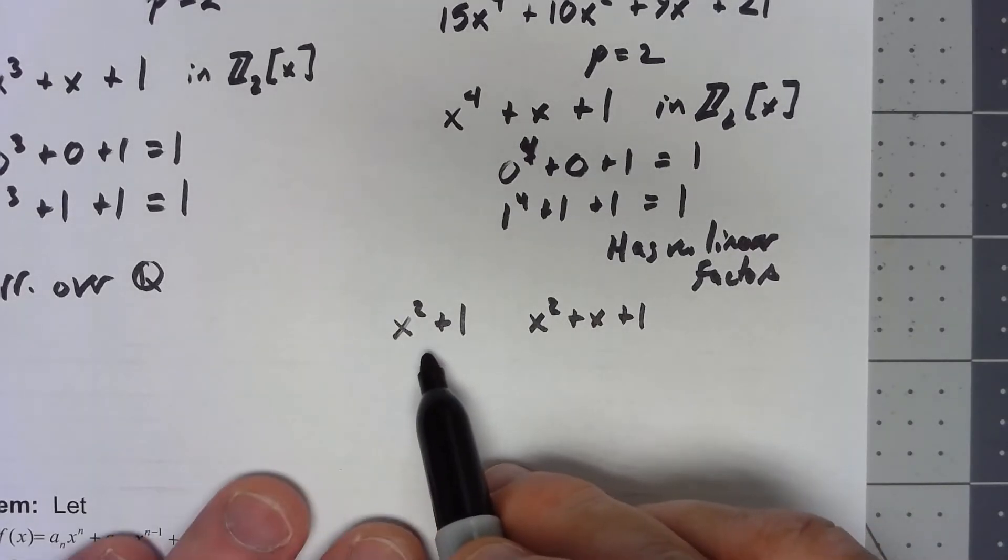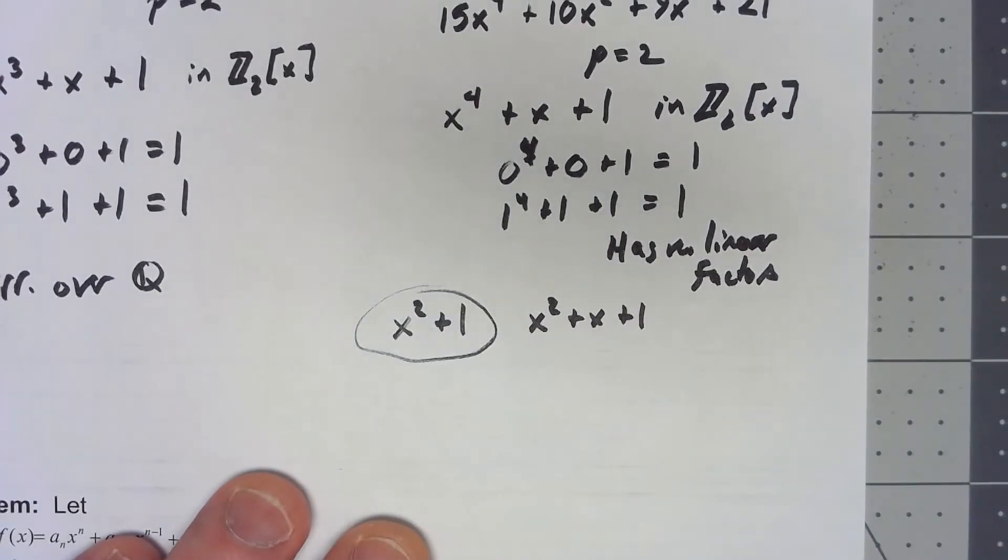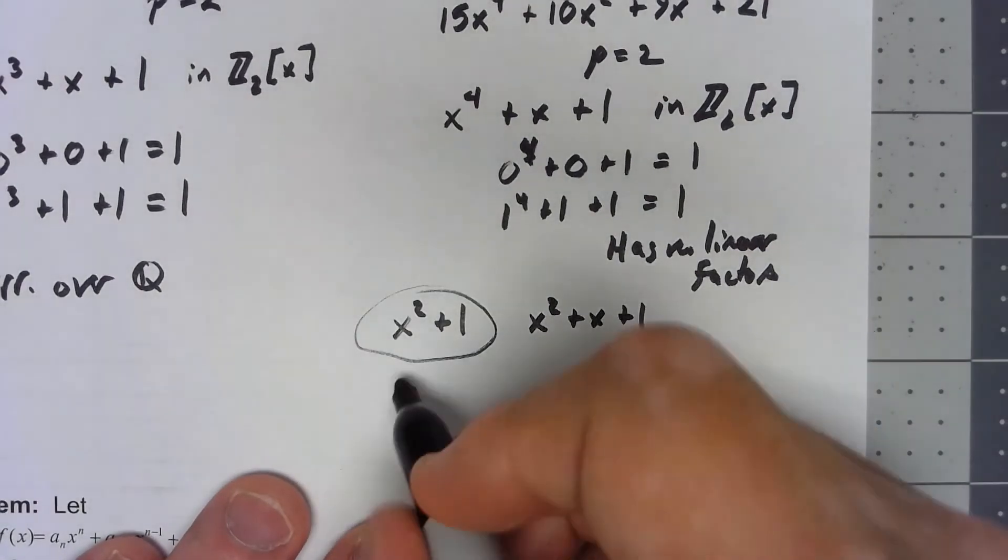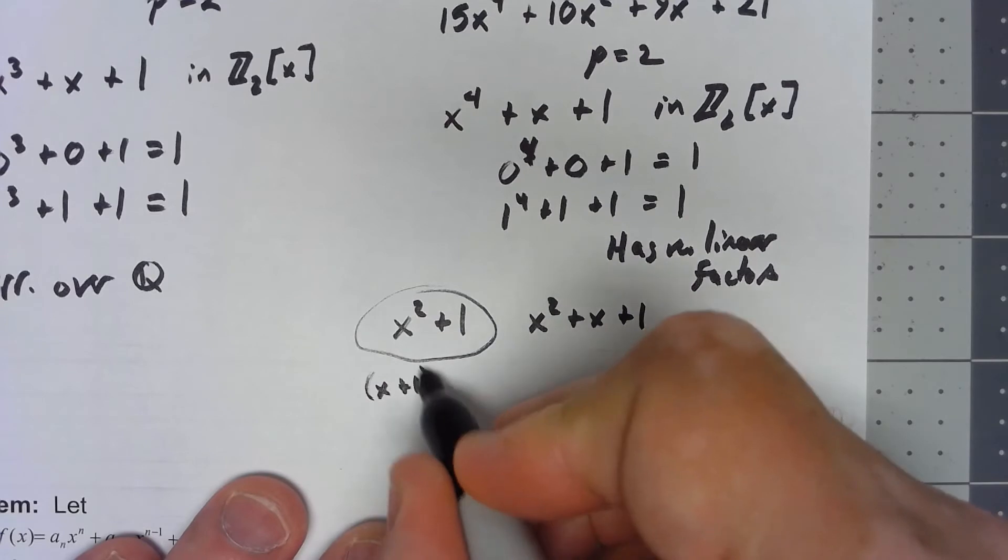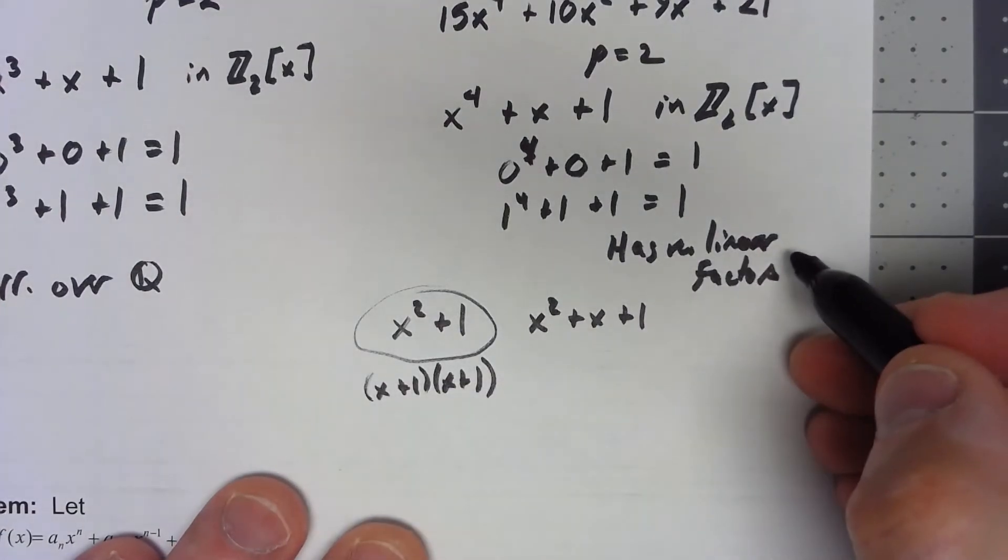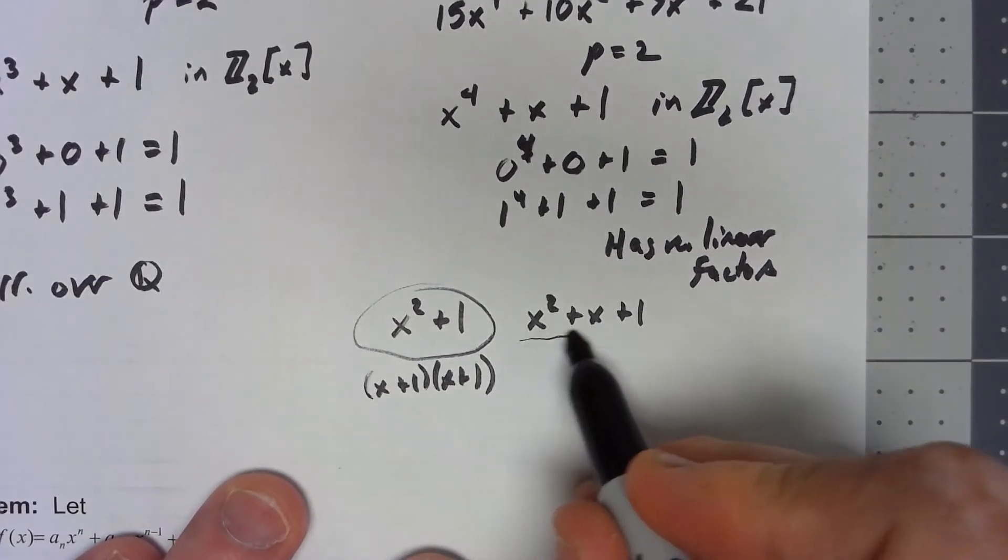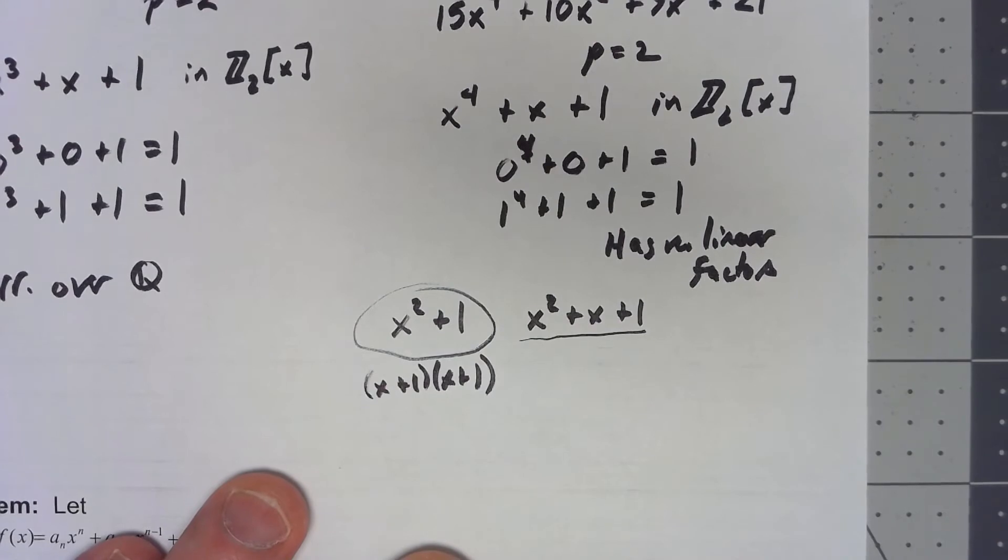So now I can say this one isn't there because this actually factors as (x + 1)(x + 1) in Z₂, and we already said it has no linear factors. So that's out. So the only possibility is this.